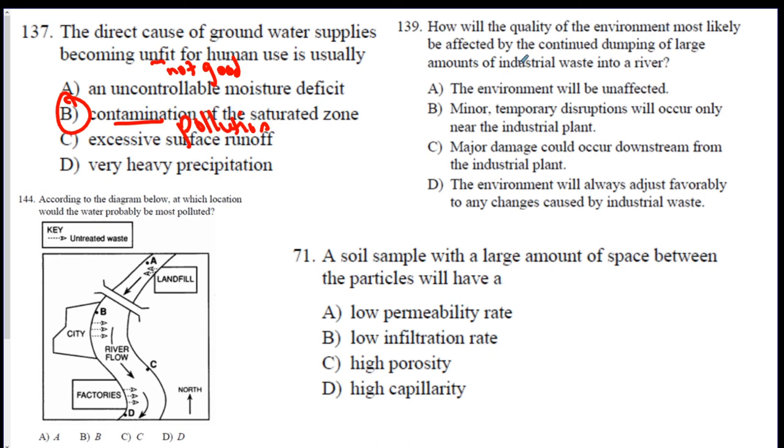139 in the top right. How will the quality of the environment most likely be affected by the continued dumping of large amount of waste into a river? This is pollution. So how will pollution affect the environment? Major damage could occur downstream from the industrial plant. Meaning down a river, all the pollution can go down a river and cause problems to a city that's down the river. So C is the best answer. It will definitely not be unaffected. Minor temporary disruptions will only occur near it. No, the waste is going to travel down the river, so it's going to affect a lot of places. The environment will always adjust favorably. That means good. To waste? No.